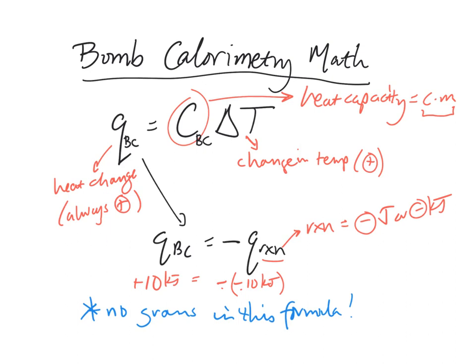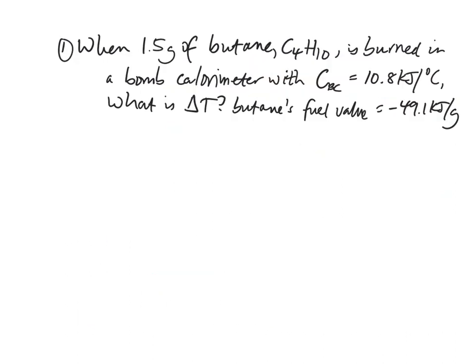All right, let's try out a sample problem. So this problem asks us when 1.5 grams of butane, C4H10, is burned in a bomb calorimeter with heat capacity of the bomb calorimeter, that's the C_BC, equal to 10.8 kilojoules per degree Celsius, what is delta t?